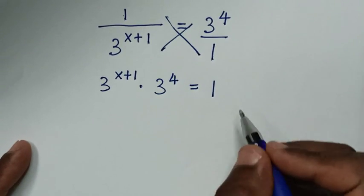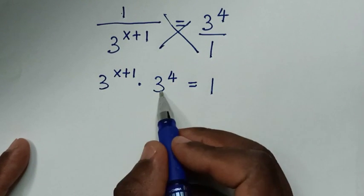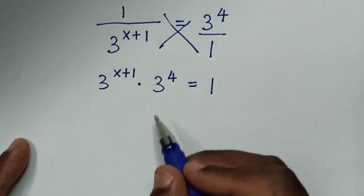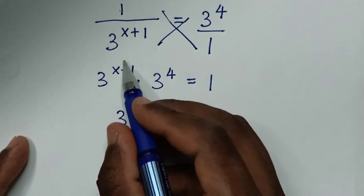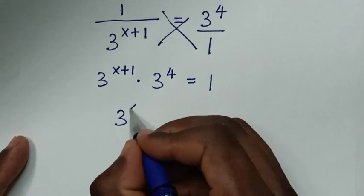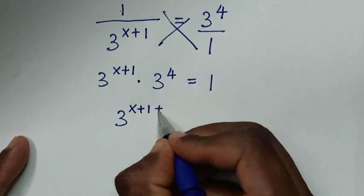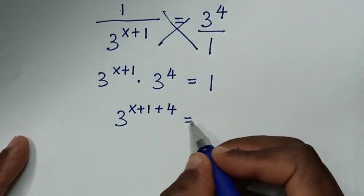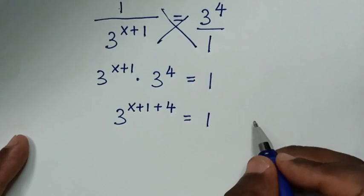In the next step, using the multiplication of exponents with the same base of 3, it will be 3^(x+1+4), which is 3^(x+5), is equal to 1.